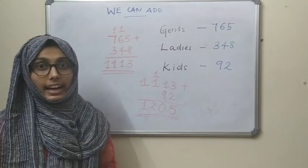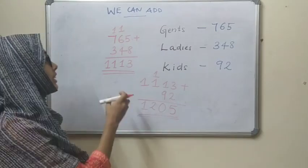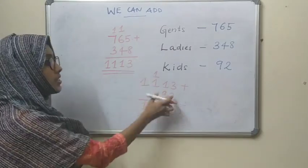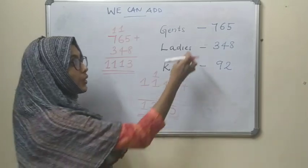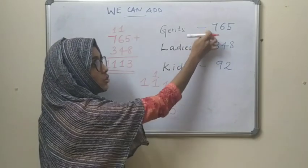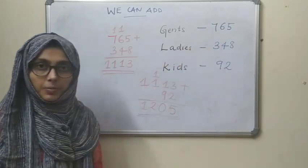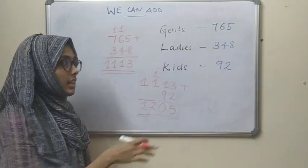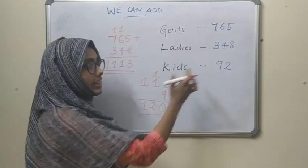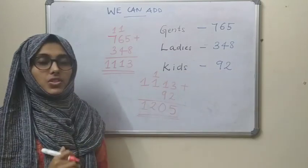We added it in two steps — first we added the first two numbers, then with that result we added the last number.